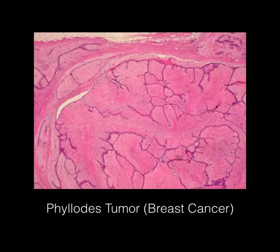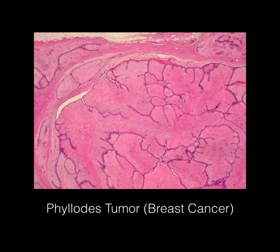Here we have a phyllodes tumor, which is a type of breast cancer. It kind of has a leaf-like projection — that's how it's described. It's another good one to keep in mind because in clinical practice it's rather rare, but the histology is so unique that it becomes high yield for USMLE.